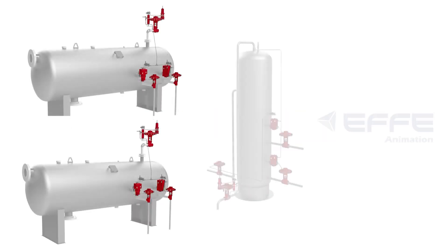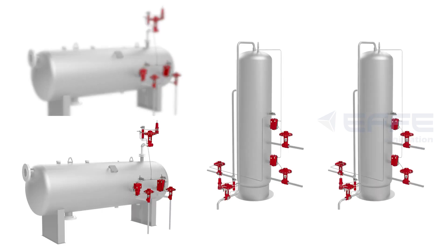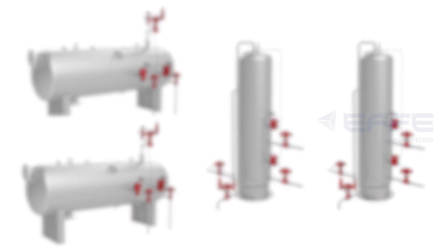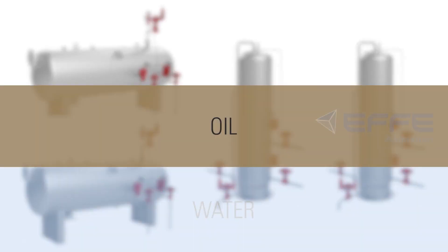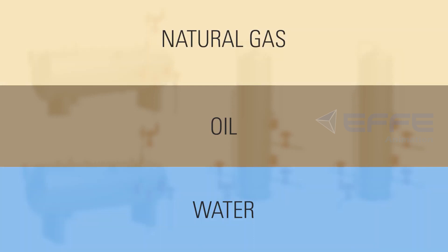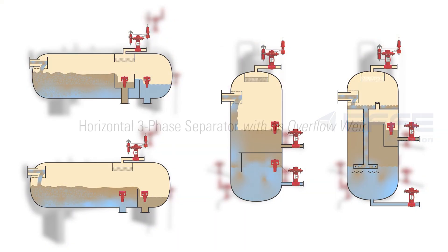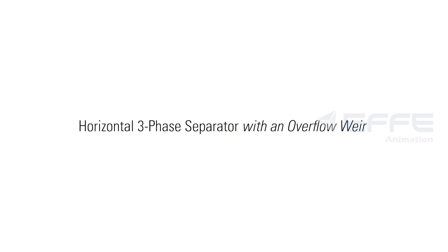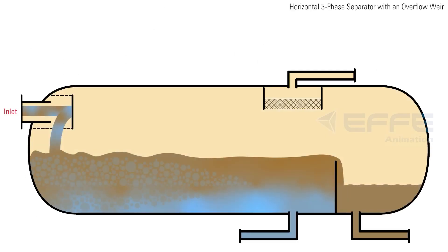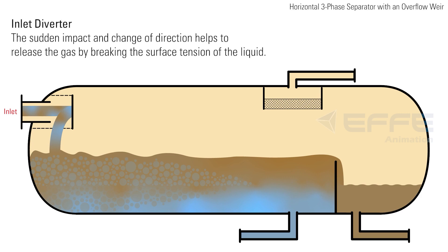Horizontal and vertical three-phase separators split emulsion into three individual components: oil, water, and natural gas. In this video we'll review four configurations for three-phase separators. In a horizontal three-phase separator with an overflow weir, fluid enters the vessel through an inlet and immediately hits an inlet diverter. This sudden impact and change of direction helps to release the gas.